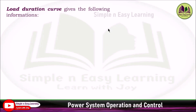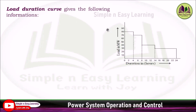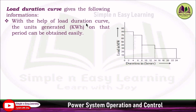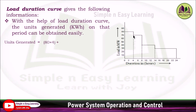The load duration curve gives the following information. With the help of the load duration curve, the units generated in a particular period can be obtained easily. For example, in this load duration curve the maximum demand is 80 megawatt for 4 hours, so units generated equal 80 × 4. The next is 70 megawatt for 4 hours.